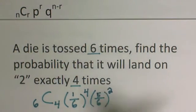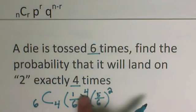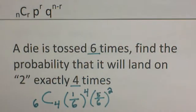The other way I like to think of it is if 4 times we want to succeed, how many times out of the 6 does that leave to fail? So 4 successes and 2 failures adds up to a total of 6 times that we tossed it.